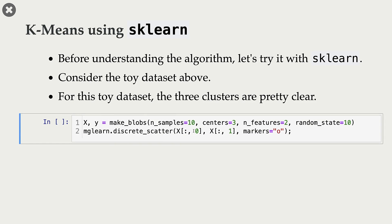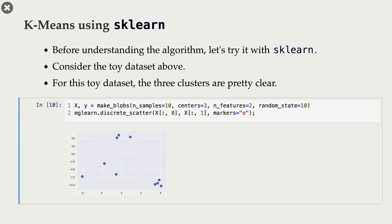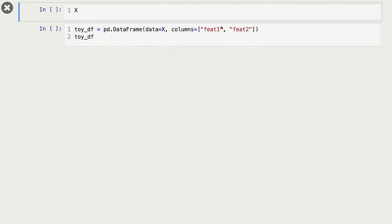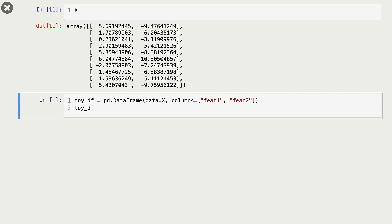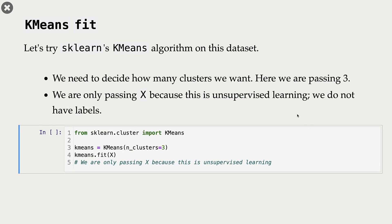Before going into the details of the algorithm, let's try it out with scikit-learn. This is the toy data that we saw before. This is how it looks as a numpy array and as a data frame. Now let's try K-means on this toy data set.